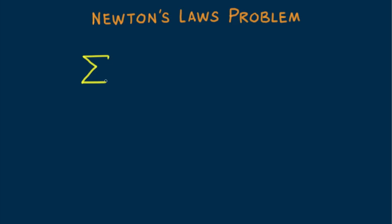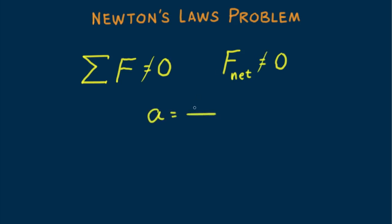Recall the equilibrium rule. When the sum of all the forces acting on an object is zero, no acceleration occurs. But in situations where the sum of the forces acting on an object is not zero, the object will accelerate. This acceleration depends upon the net force and the object's mass as given by Newton's second law.